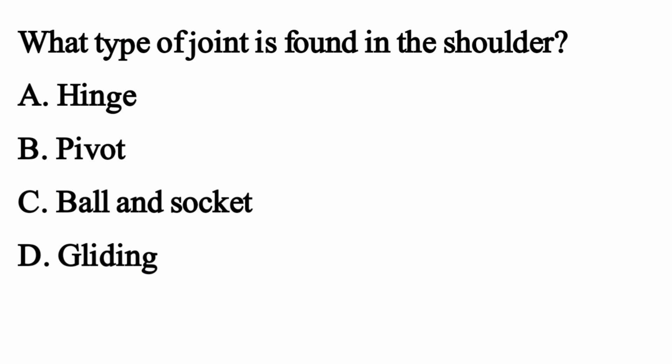What type of joint is found in the shoulder? The right option is Option C: Ball and socket.